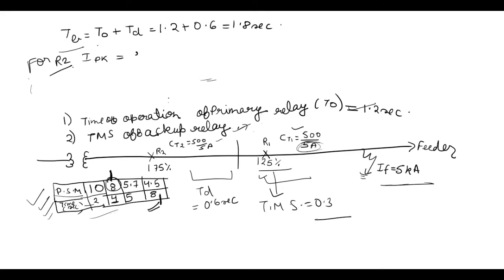Percentage setting of relay. So percentage relay for R2 is 175 by 100 into CT secondary current which is again 5 ampere. So it is 8.75 ampere. And now we are going to find PSM which is fault current. Fault current is 5000 upon pickup current which is 8.75 ampere into CT ratio which is 500 upon 5. So PSM is equal to 5.7.